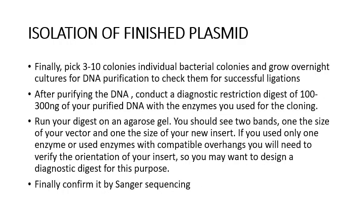Once your plate shows transformed colonies, pick 3 to 10 individual colonies, grow them overnight, purify your DNA, then perform restriction digestion to check whether your gene of interest is inserted into the plasmid at the right position, followed by sending it for sequencing to confirm the perfect sequence. You can also perform colony PCR along with a negative control to confirm whether your colonies are positive or negative. In some cases, you should also perform positive control reactions to confirm whether your cloning is done correctly.